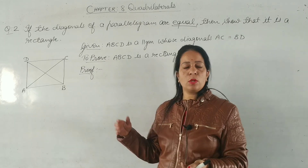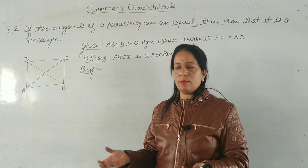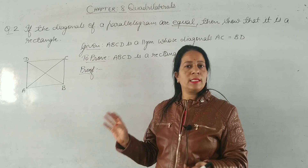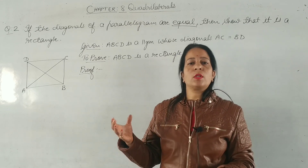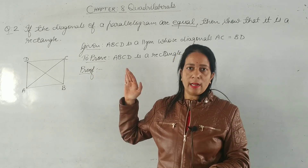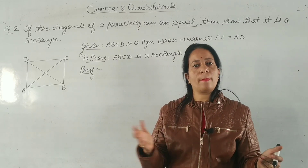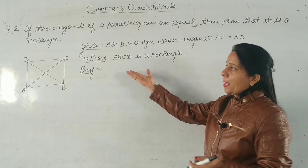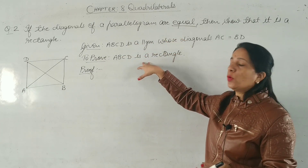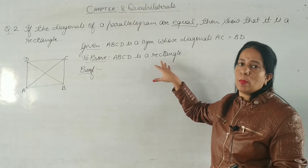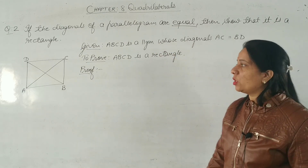We need to know the properties of both parallelogram and rectangle. A parallelogram has opposite sides parallel and equal, opposite angles are equal, and diagonals bisect each other. A rectangle has opposite sides equal, all angles are right angles, and diagonals are equal. We have to take a parallelogram with its properties and prove it satisfies the properties of a rectangle.